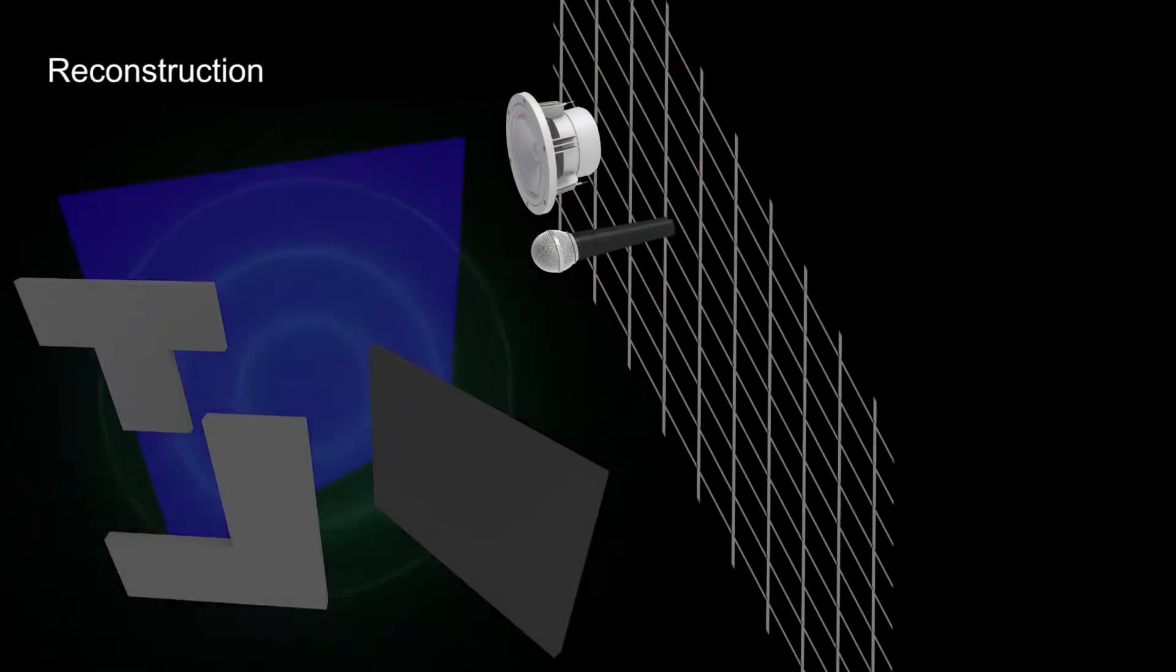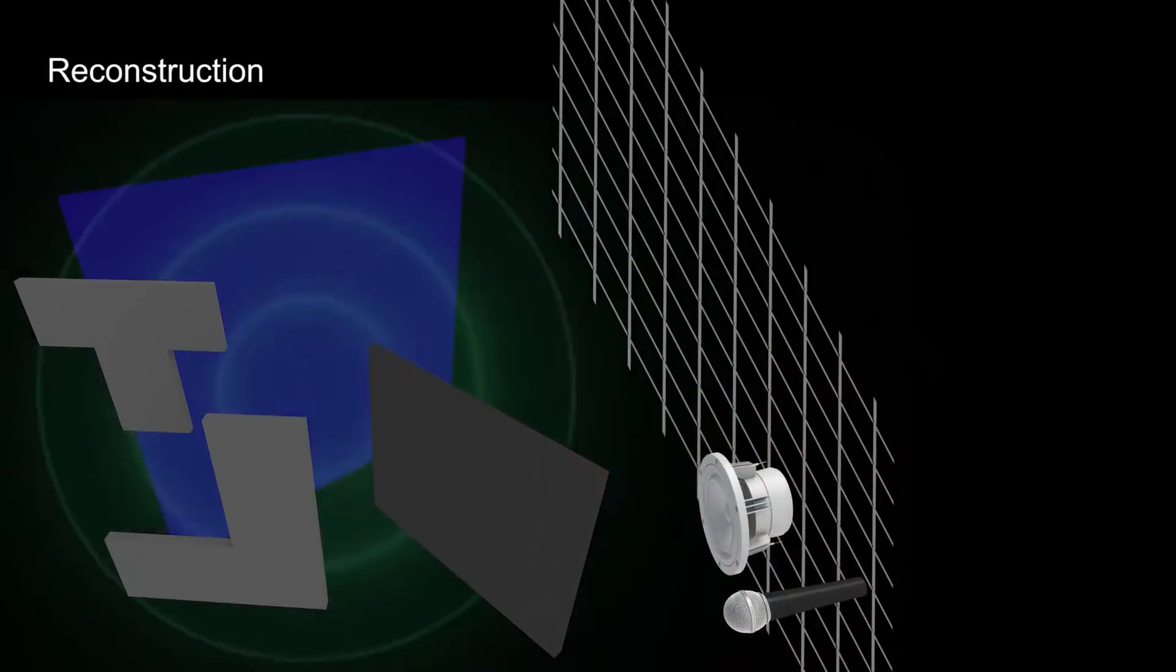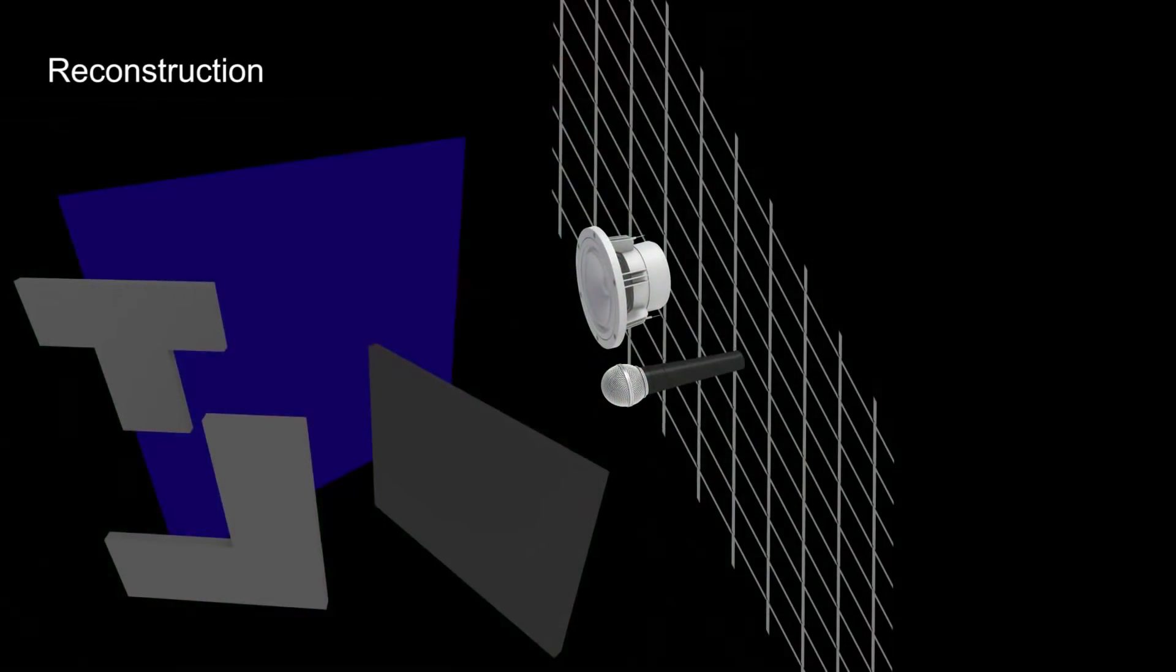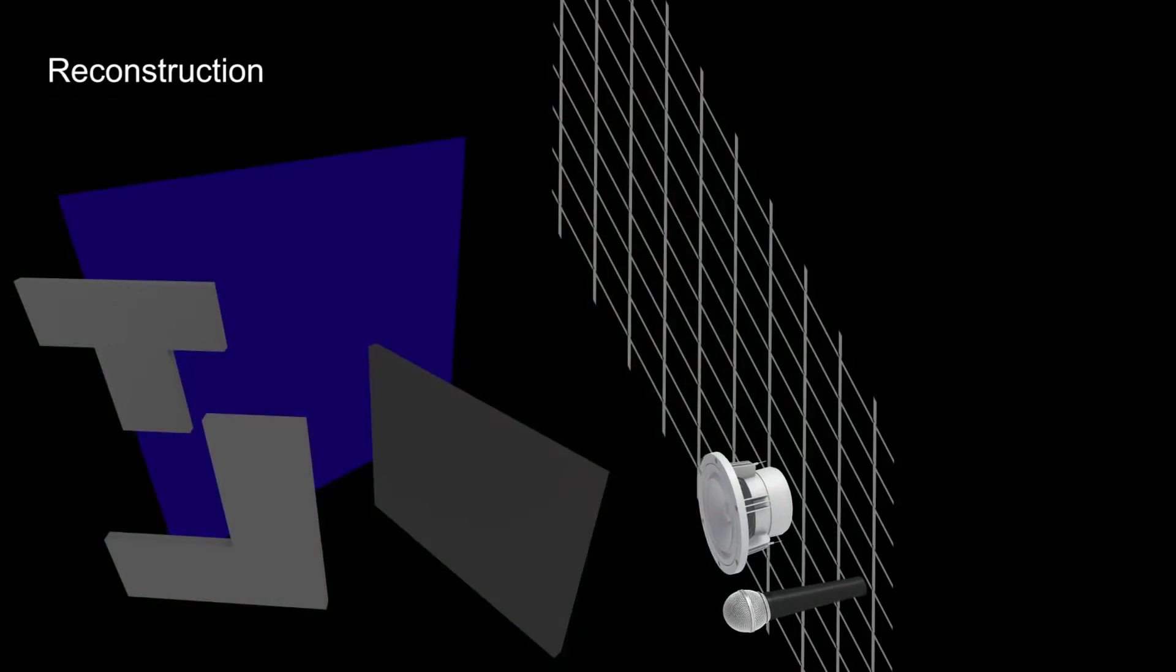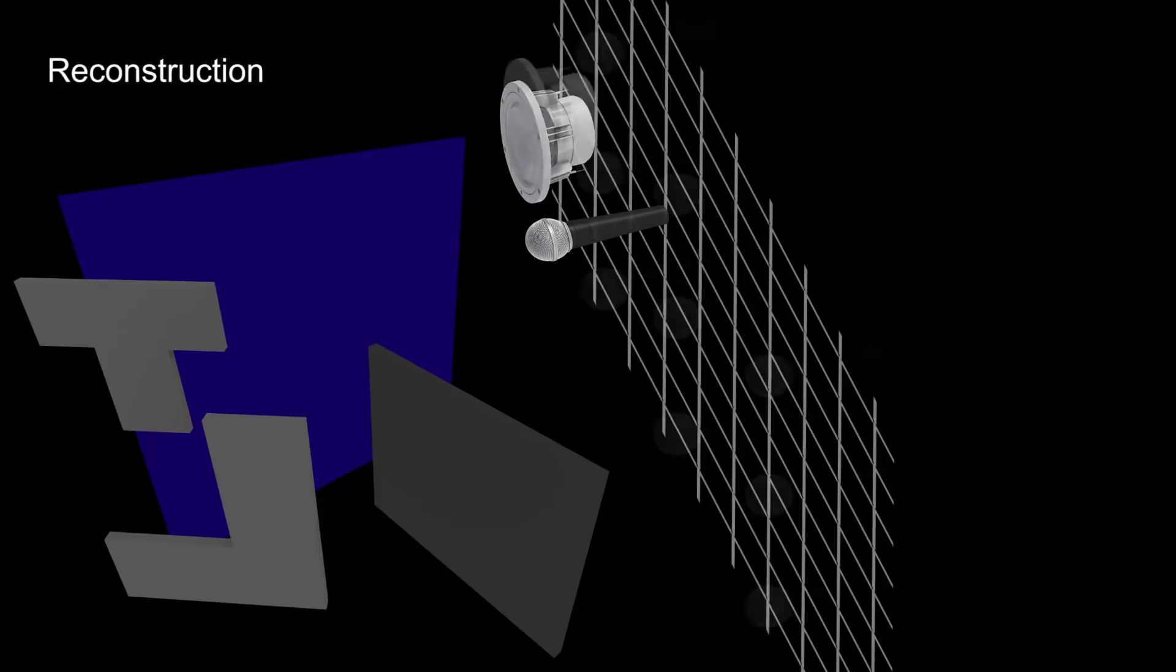For measurements taken at different spatial locations with closely spaced speakers and microphones, we can use efficient closed-form solutions to reconstruct 3D geometry. This sampling arrangement is analogous to confocal sampling in optical non-line-of-sight imaging, where the laser and sensor share an optical path.